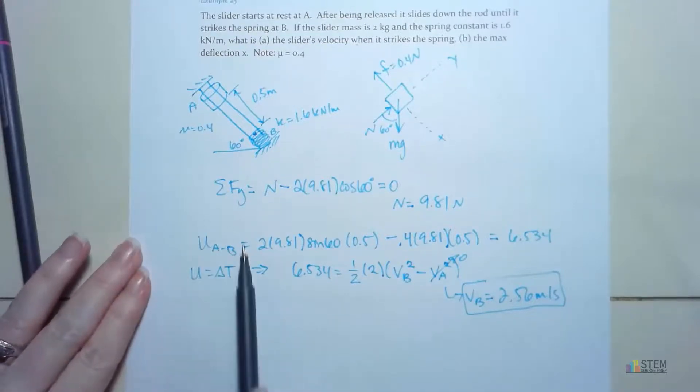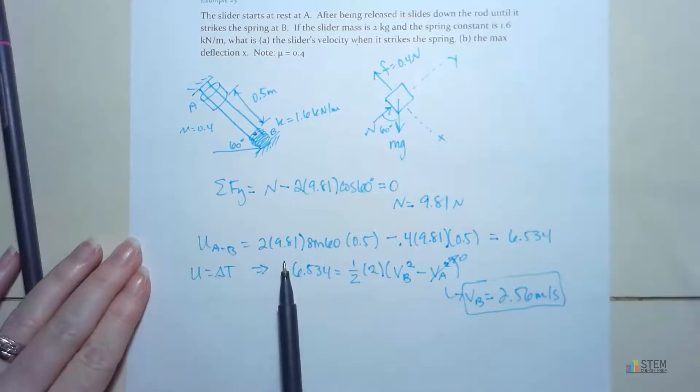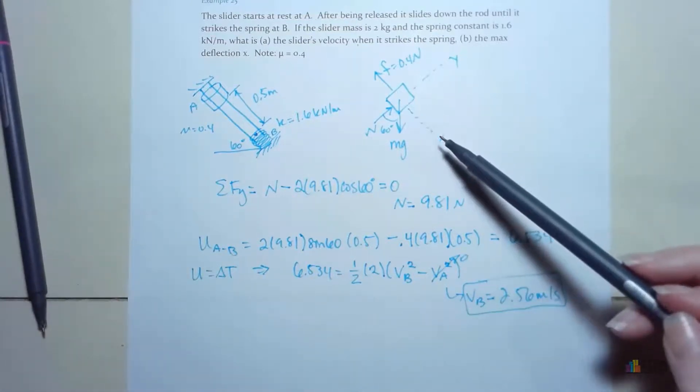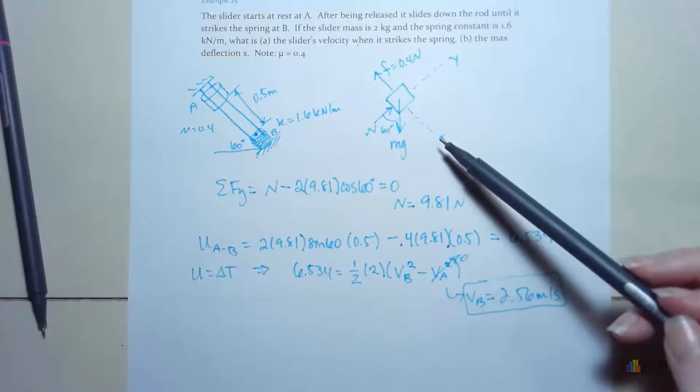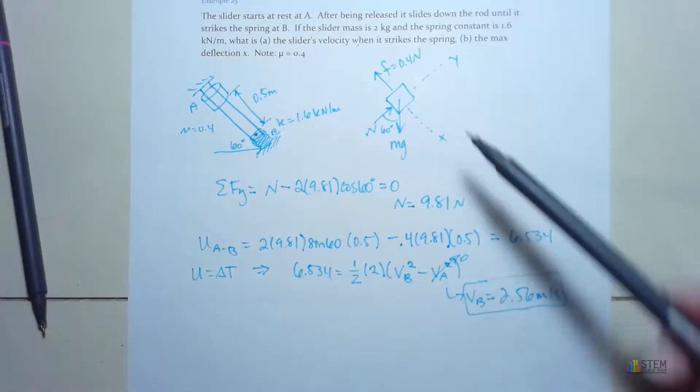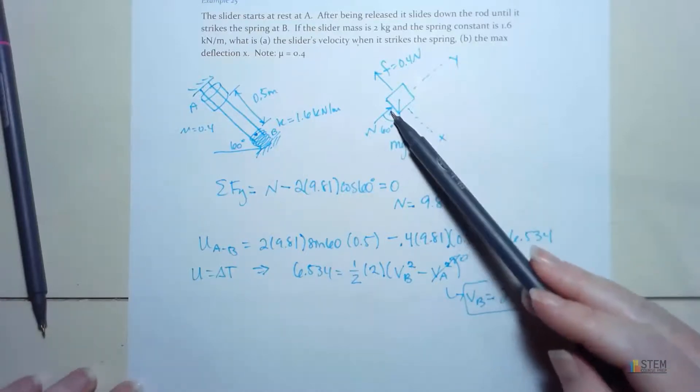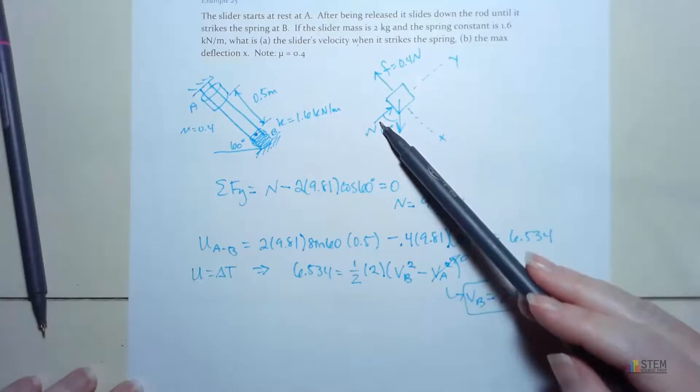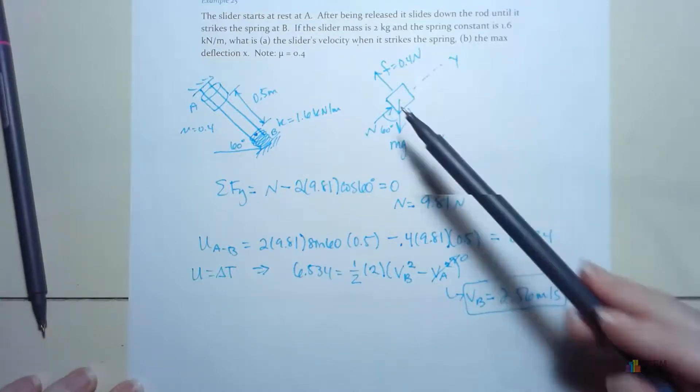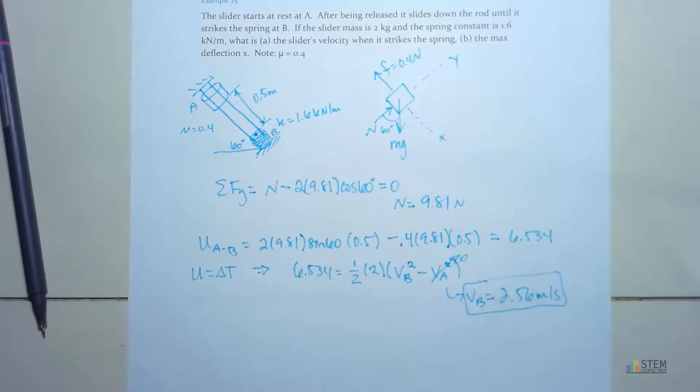So the key to the work equation here is you've got to find the components of force that are in the direction of motion. If there is no displacement in the direction of the force, there is no work done. So that's why this N right here, we didn't have a work equation for that, because we're not moving in this direction. So that takes care of part A.